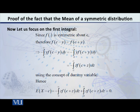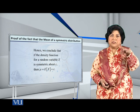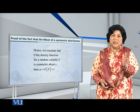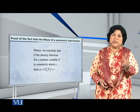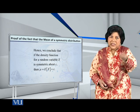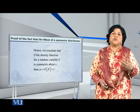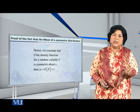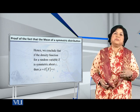So what we wanted to prove is proved. E(X minus c) equals 0, implying that the expected value of X equals c. This means that if our function is symmetric around the point c, then the mean — the expected value of X — is equal to c, the point of symmetry.